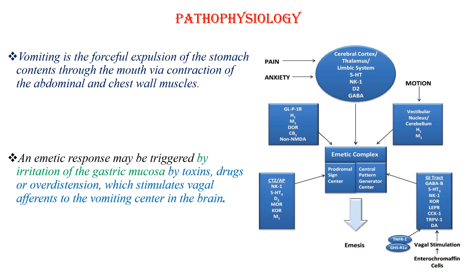An emetic response may be triggered by irritation of the gastric mucosa by toxins, drugs, or overdistension, which stimulates vagal afferents to the vomiting center in the brain.